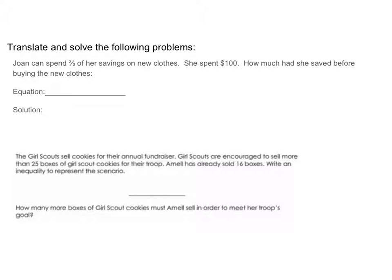So first of all, with this problem, we have to do a translation. So let's read. Joan can spend 2 thirds of her savings on new clothes. We know that she spent $100. How much had she saved before buying the new clothes? So we have some key words here. First of all, 2 thirds of her savings. The of represents multiplication. So we know that the total amount that she spent is 100. So this is actually going to represent an equal 100. And we want to know how much her savings was in the beginning. So that's our unknown. We'll call that D because it's money.